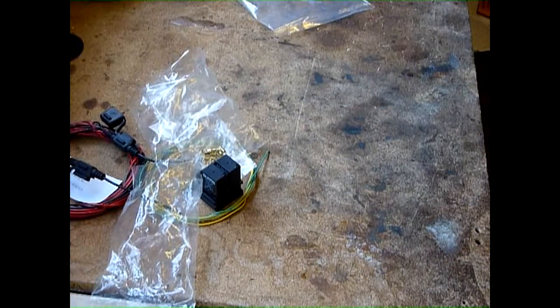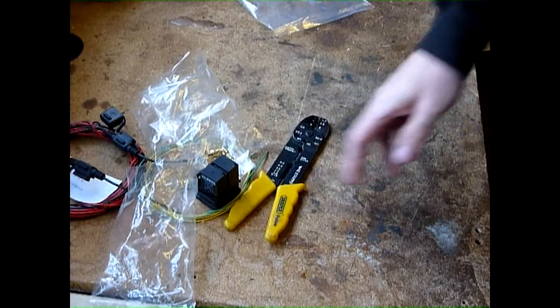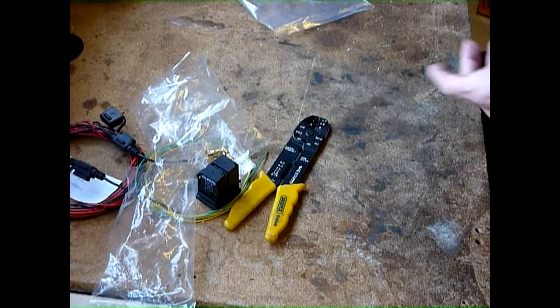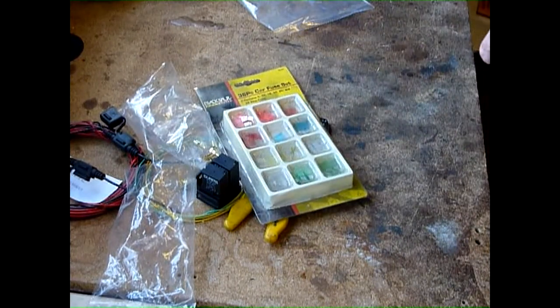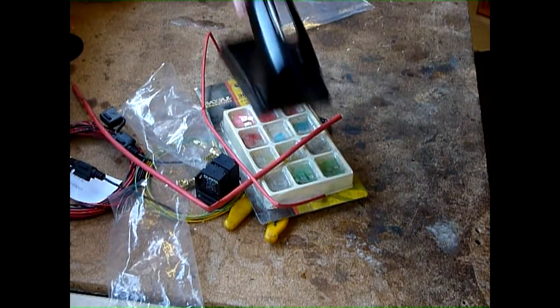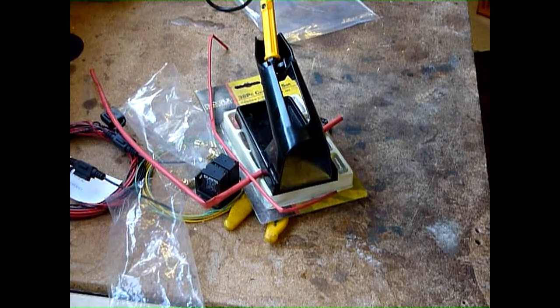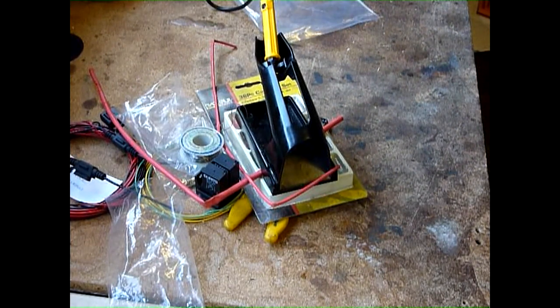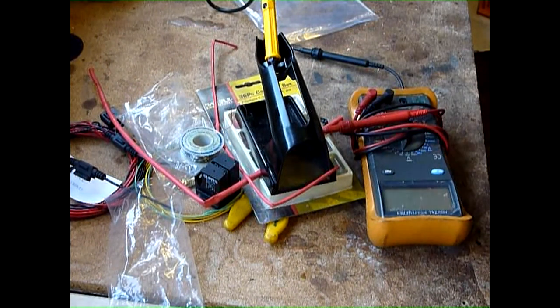Other things that we're going to need. Crimp tool. Fuses. Some heat shrink tubing. Soldering iron. Solder. Multimeter. And a cup of tea.